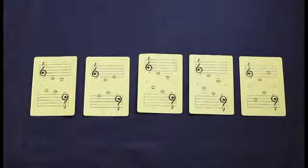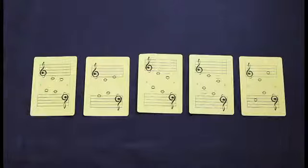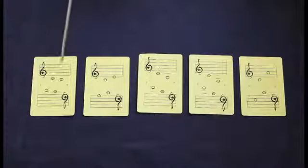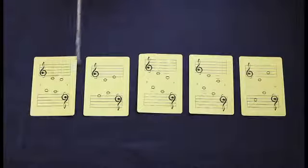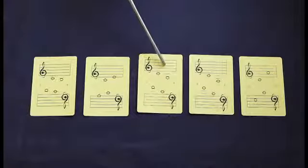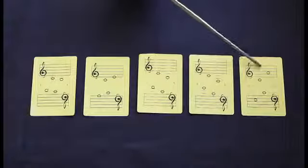Each keynote has five cards representing a range of intervals from seconds through sixths. In this example: middle C is a second, middle C third, middle C fourth, middle C fifth, middle C sixth.